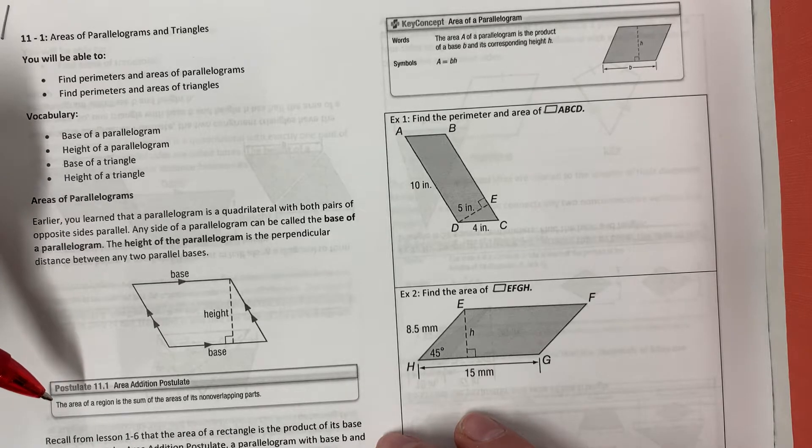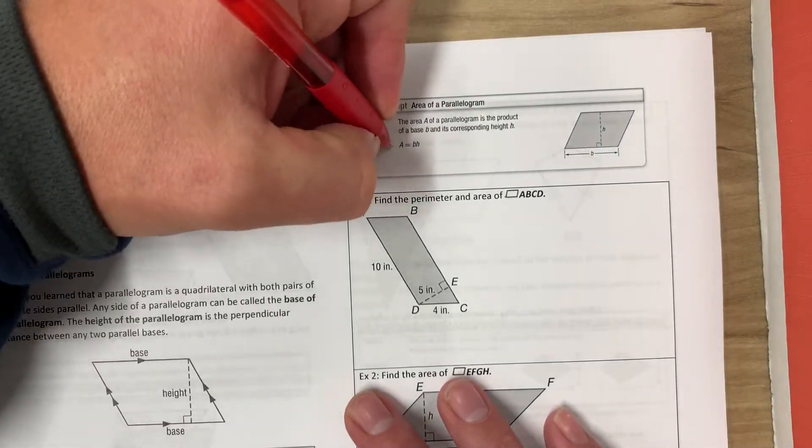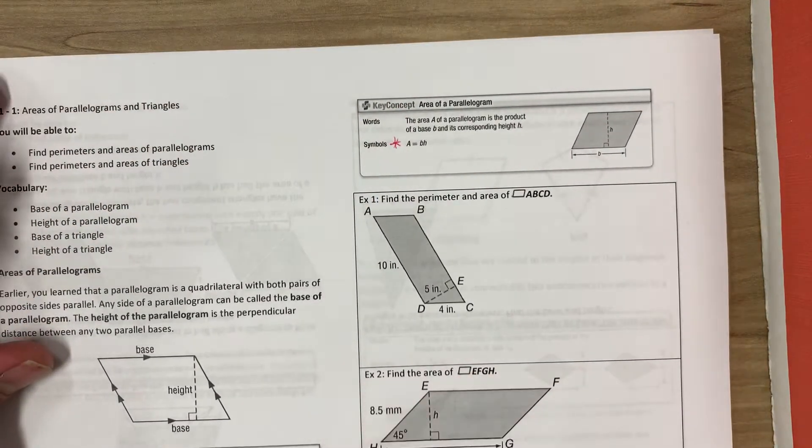The area of a region is the sum of the areas of its non-overlapping parts. Recall from lesson 1-6 that the area of a rectangle is the product of its base and height. By the area addition postulate, a parallelogram with base B and height H has the same area as a rectangle with base B and height H. So here is the area of a parallelogram formula: A equals base times height.